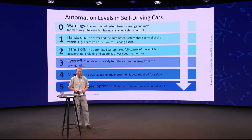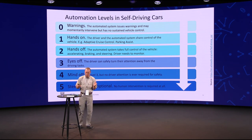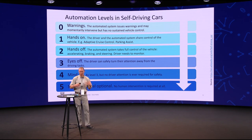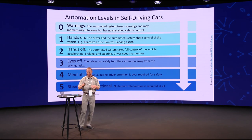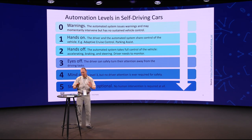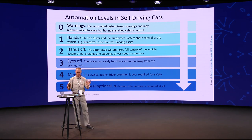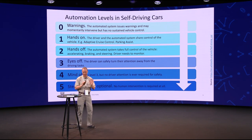On level one, it is self-driving sometimes. For example, when you're driving on the highway, it may keep the distance to the car in front of you, keep the lane. It may be able to park a car for you. So it is driving autonomously a little bit, sometimes.